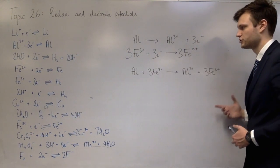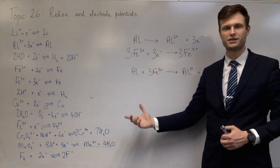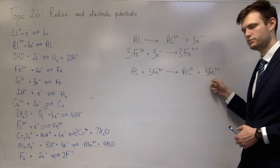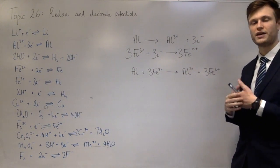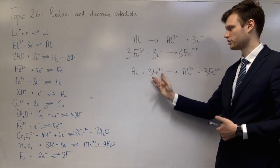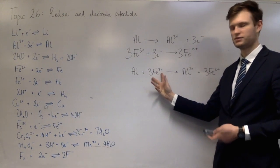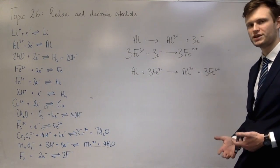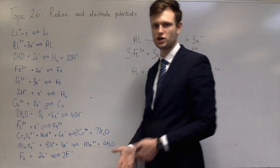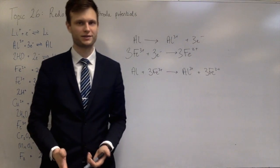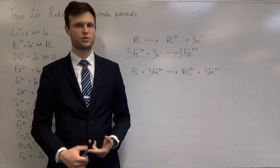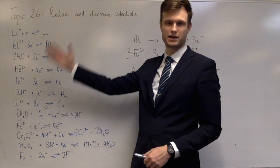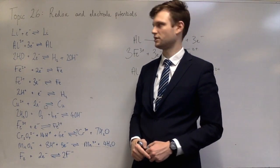At the end I check everything balances — atoms and charge. Here I've got 9+ on the left and 3+ plus another 6+ makes 9+ on the right. With redox equations I always check using charge as well as normal balancing methods. You can predict so many reactions from this set of data.